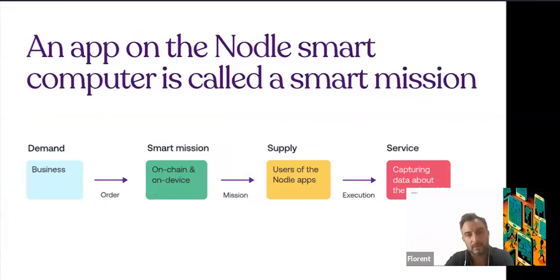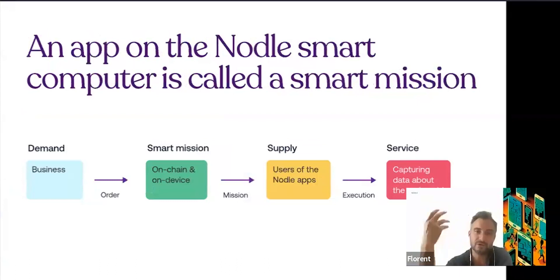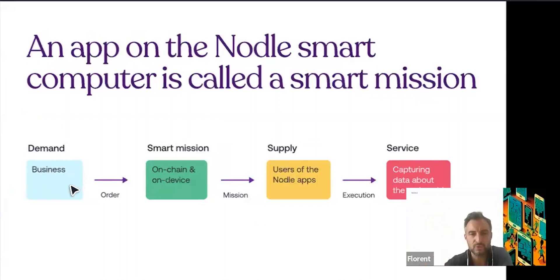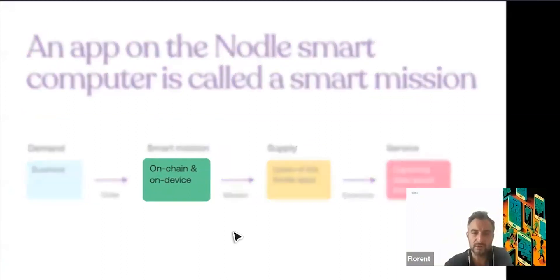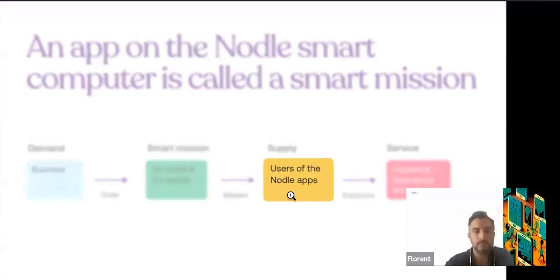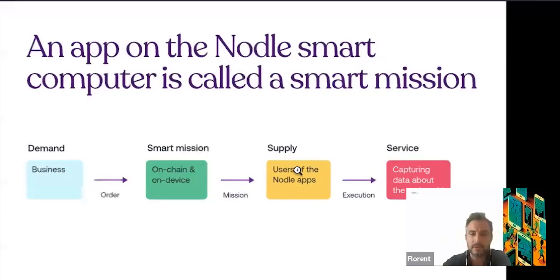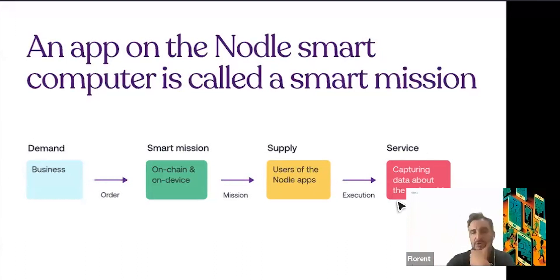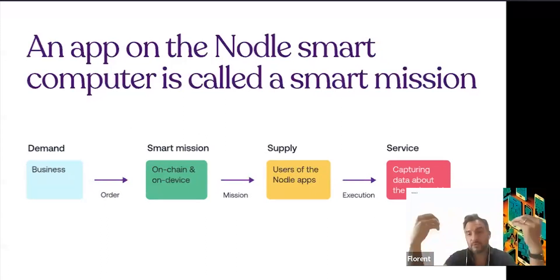A smart mission is essentially an app on the swarm computer. A business places an order on-chain — that's called a smart mission. The mission is then taken by the supply side, which is Nodal app users or users of other apps with the Nodal SDK. On this marketplace you have supply and demand: the supply executes the service, which is about capturing real-world data, and that data has significant value for businesses and potentially for other users as well.